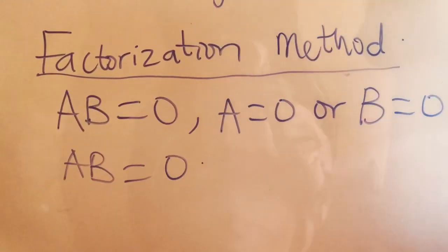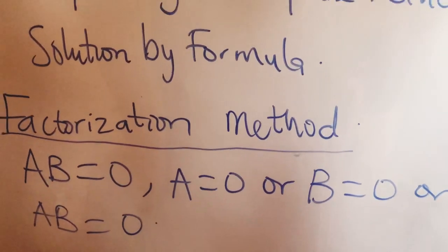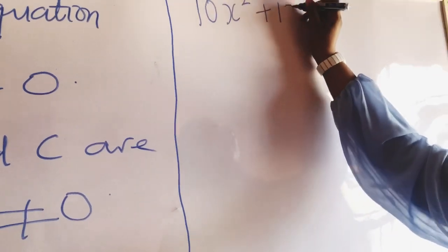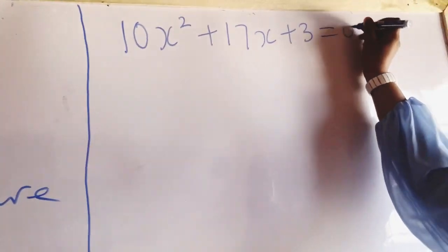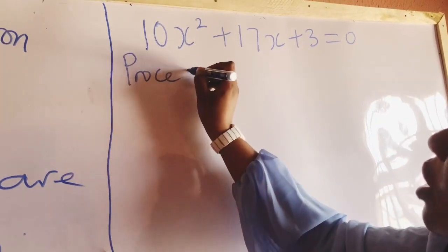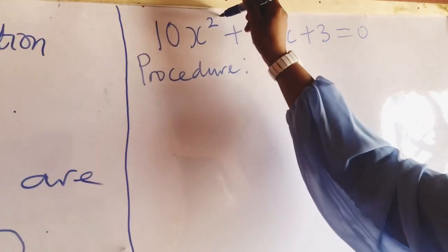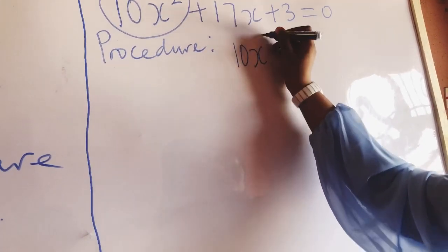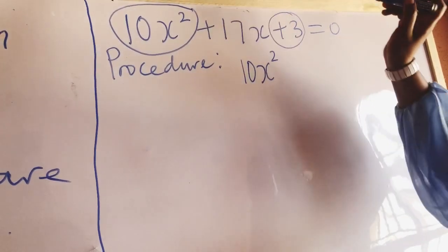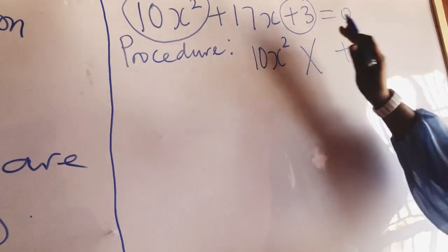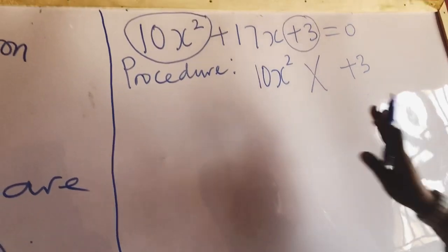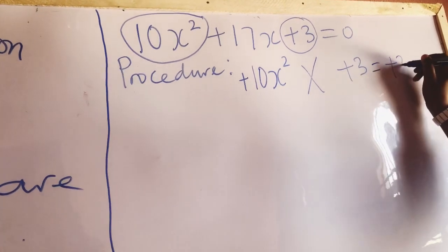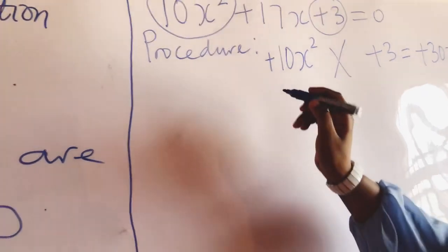Those solutions are known as roots. Now let's solve this quadratic equation using factorization method. Let's use this example: 10x squared plus 17x plus 3. You have to multiply the first term, that is 10x squared, by the last term, the constant, which is plus 3. So you get plus 30x squared. That is step 1.